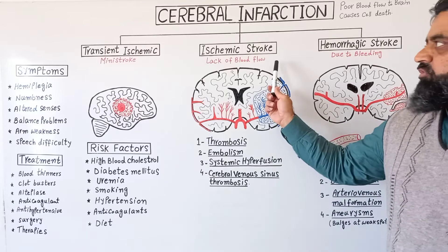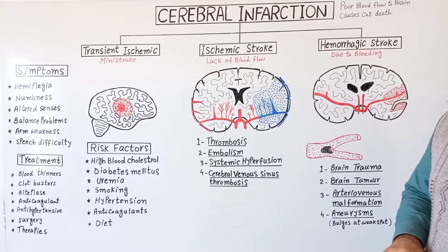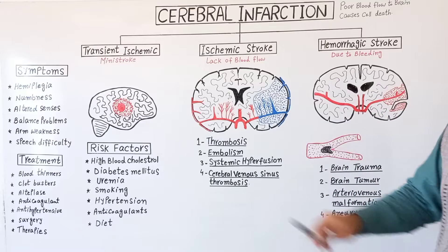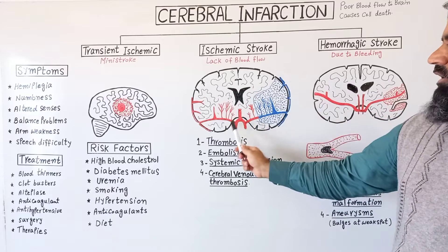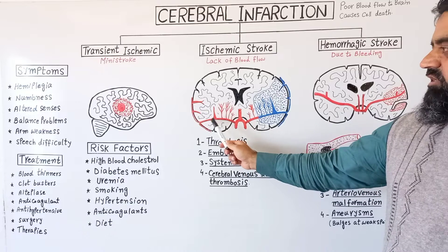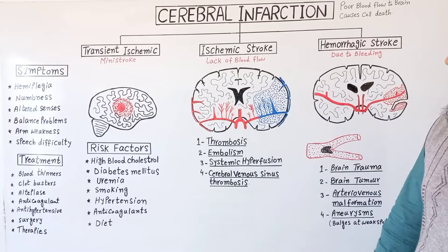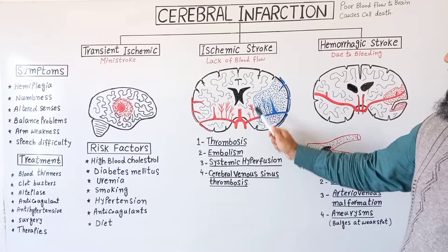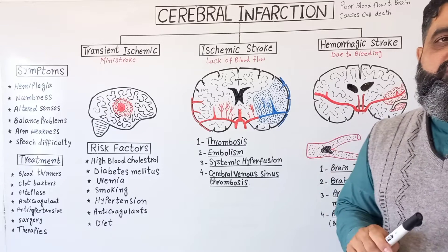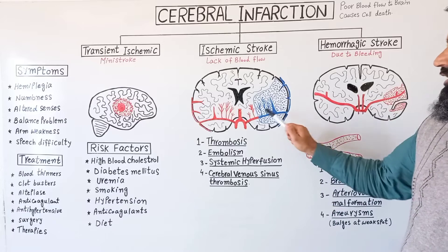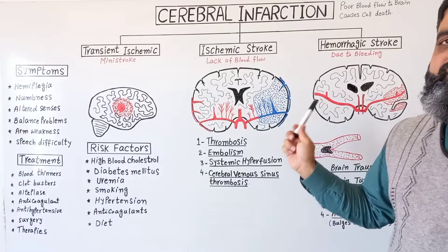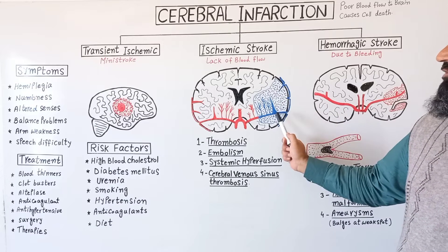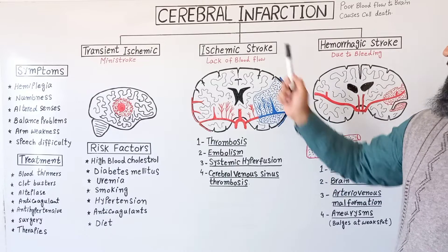The second major type of stroke is ischemic stroke, which is usually caused by a lack of blood flow to different parts of the brain. Looking at this diagram, the blood supply to one area of the brain has been reduced or blocked — shown in the blue section — and that area has become dead due to lack of oxygen and blood. This is a major cause of cerebral infarction, known as ischemic stroke.